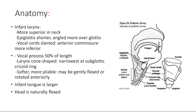The epiglottis is shorter and angled more over the glottis — it falls over the laryngeal inlet. The vocal cords are slanted, with the anterior commissure more inferior. Posteriorly, it lies more superior when compared to the anterior commissure. The vocal process comprises 50% of the length, whereas in the normal adult, the vocal ligament comprises two-thirds of the total vocal cord length.